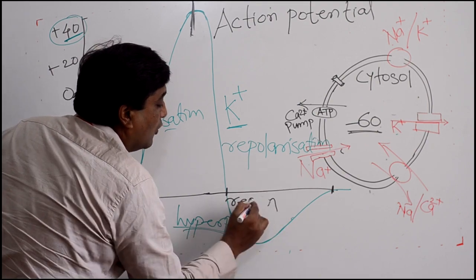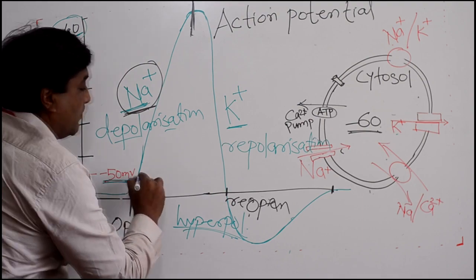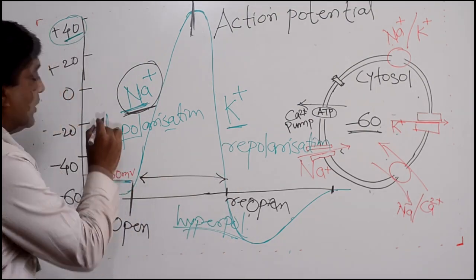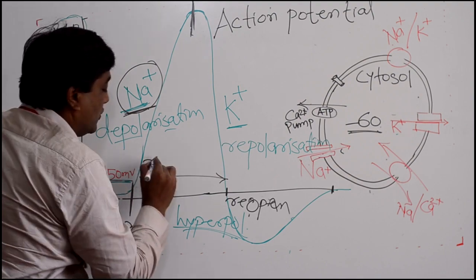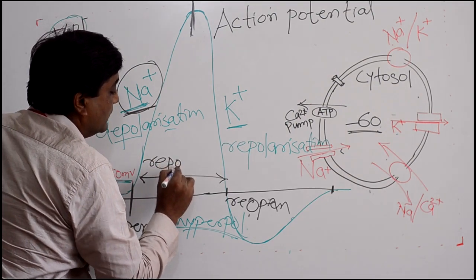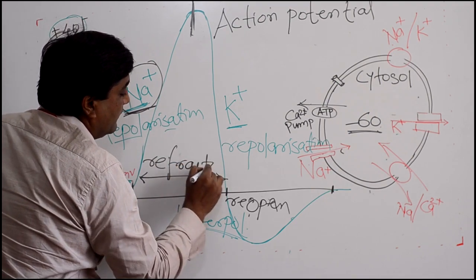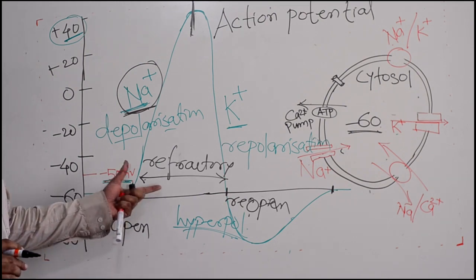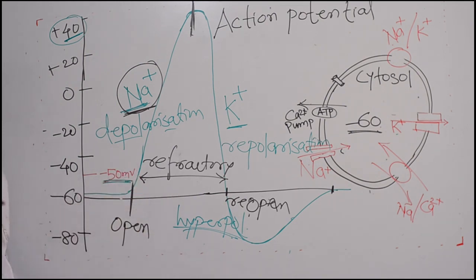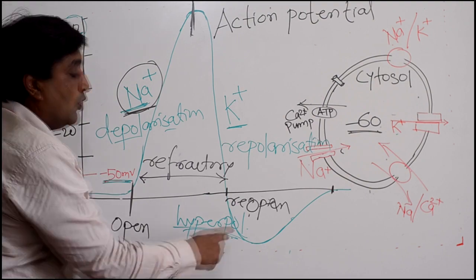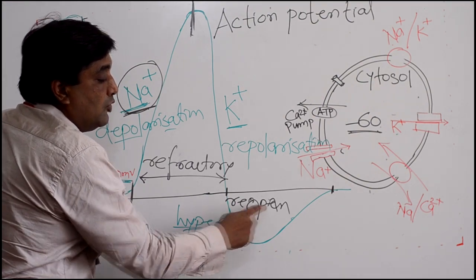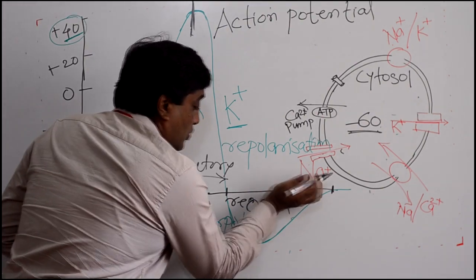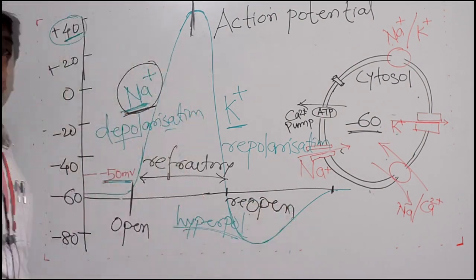The sodium ion channels are inactivated and will remain inactivated until the cell achieves the resting potential again. The period during which the sodium ion channels are inactivated — from when they opened to when they are ready to reopen — is generally called the refractory period. During this period, the cell cannot generate another action potential. The next action potential will only occur when the sodium ion channels are capable of reopening again.